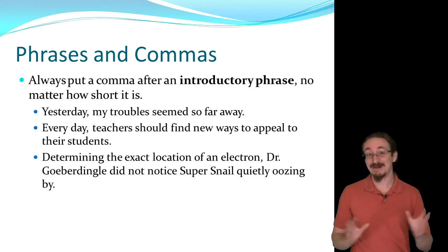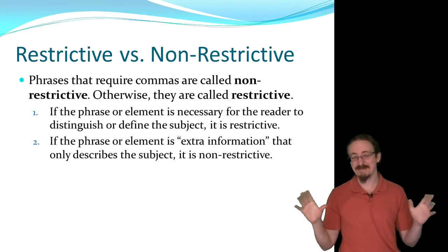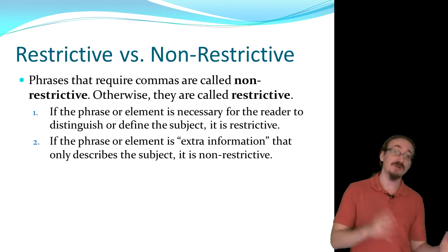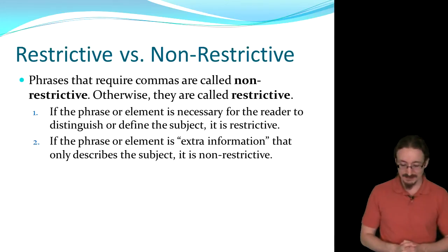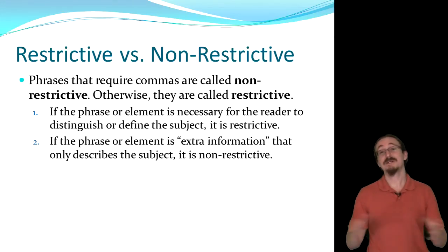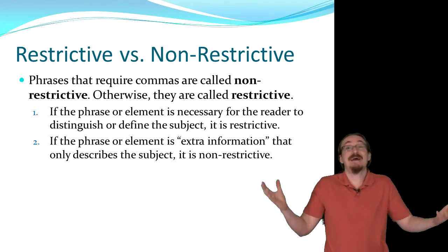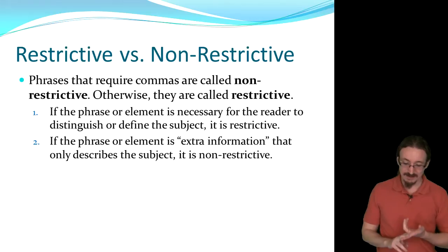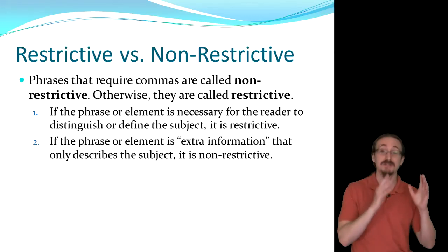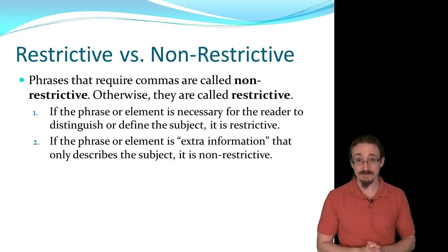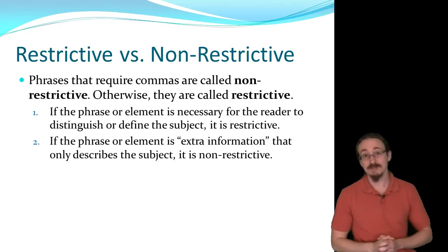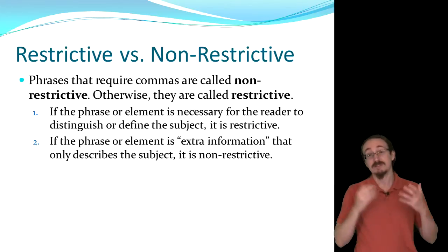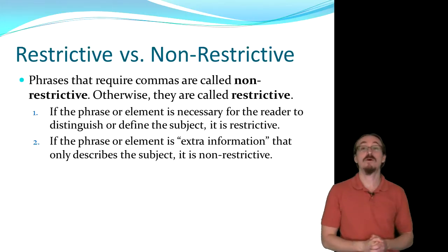Now we're going to get into something really technical: restrictive versus non-restrictive. This drives everybody nuts, but it's simple if you just think about the definition. You put a comma if it is non-restrictive, and you don't put any commas if it's restrictive. If the phrase or element is necessary for the reader to distinguish or define the noun, that's restrictive — it restricts the meaning of a word down to a smaller subset. If the phrase or element is just extra, superfluous information describing the subject but not defining it, that's non-restrictive.